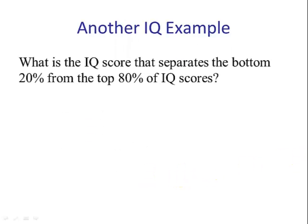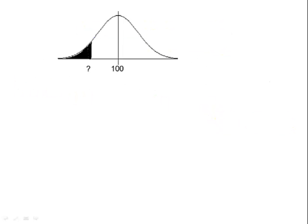Let's look at another example. What is the IQ score that separates the bottom 20% from the top 80%? This is the same thing as saying what is the 20th percentile. Our first step, we draw a picture. In this case, the score is going to be less than 100 because this is the 50th percentile. We are wanting the 20th percentile. So this area here is 20%.